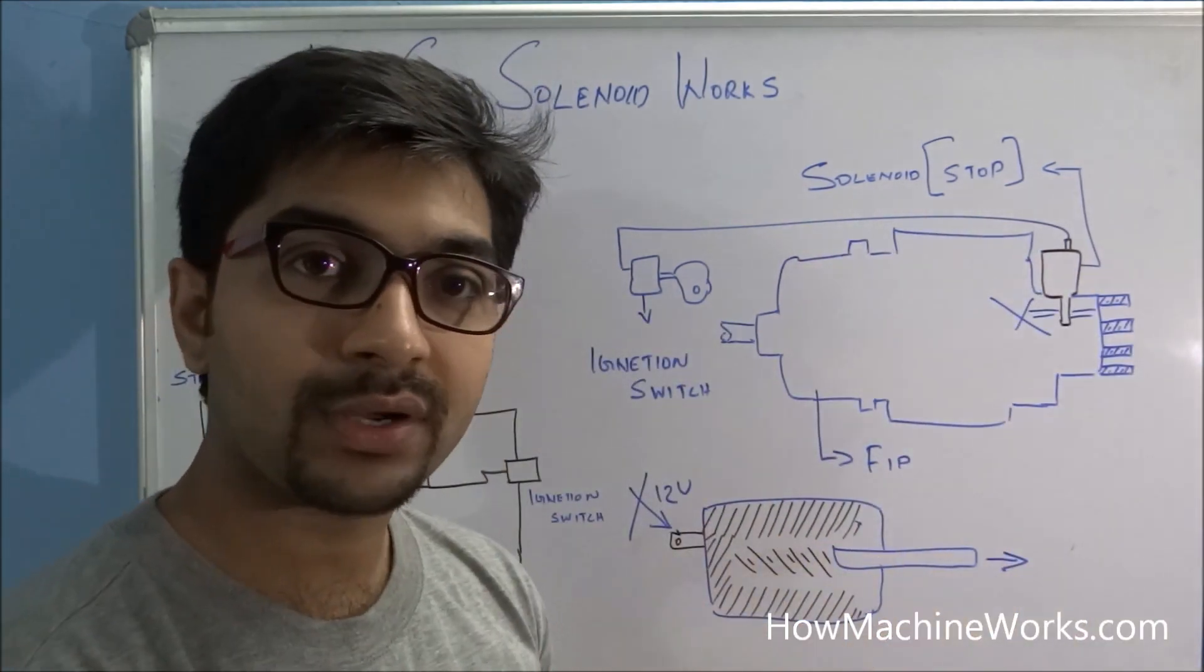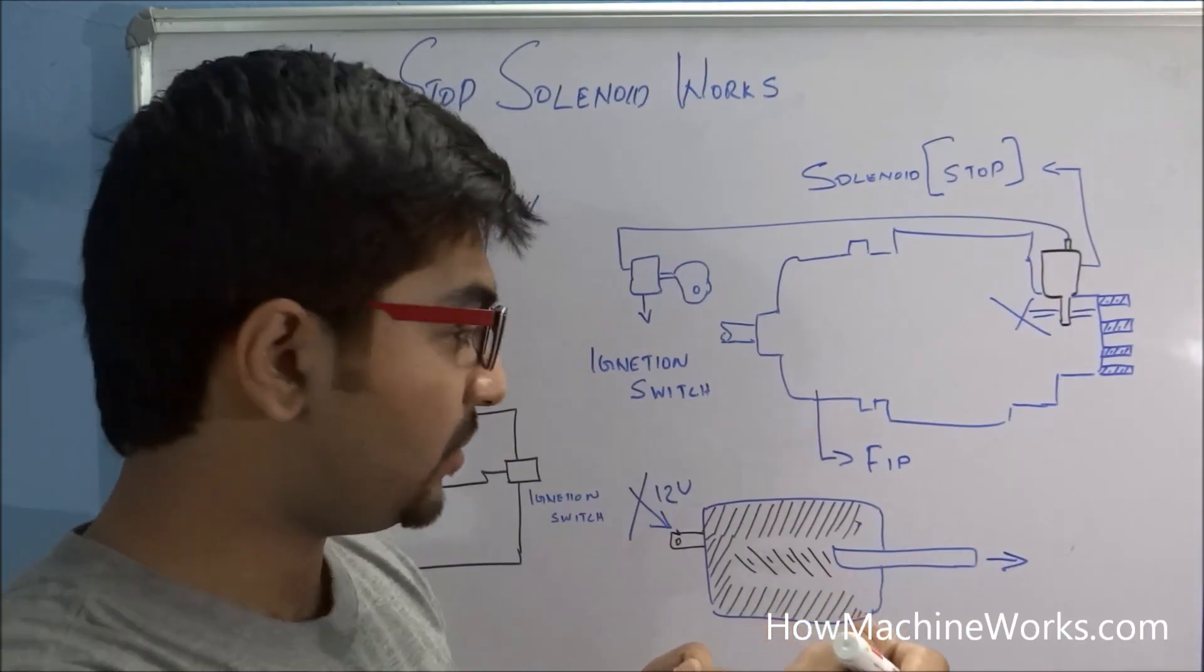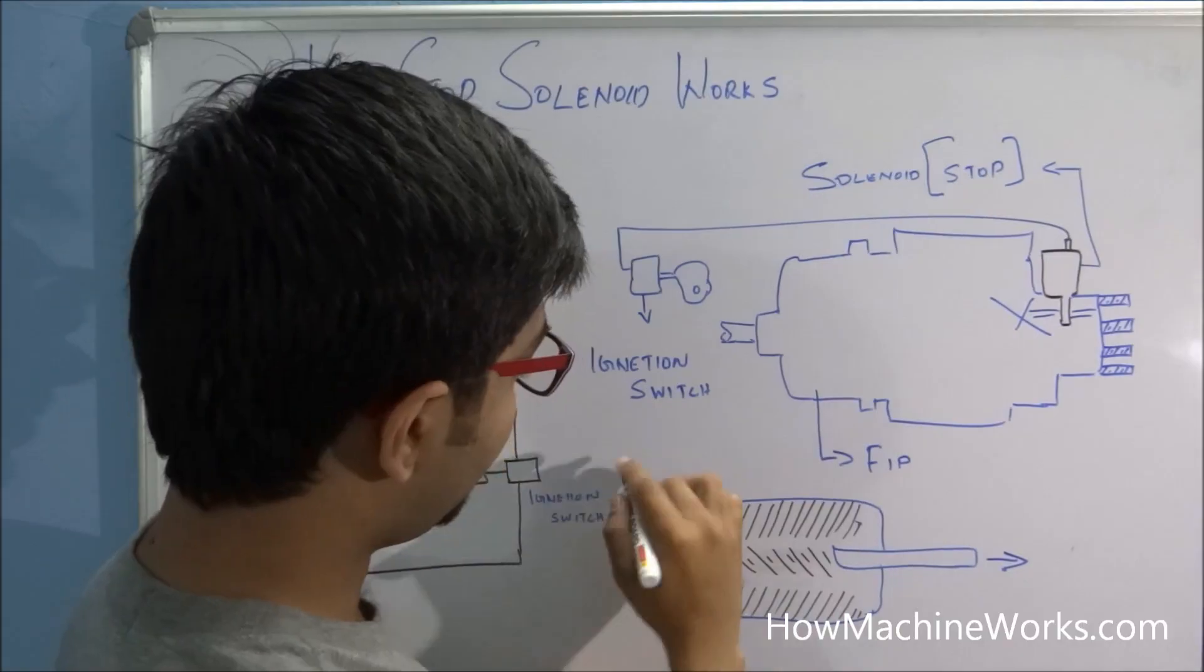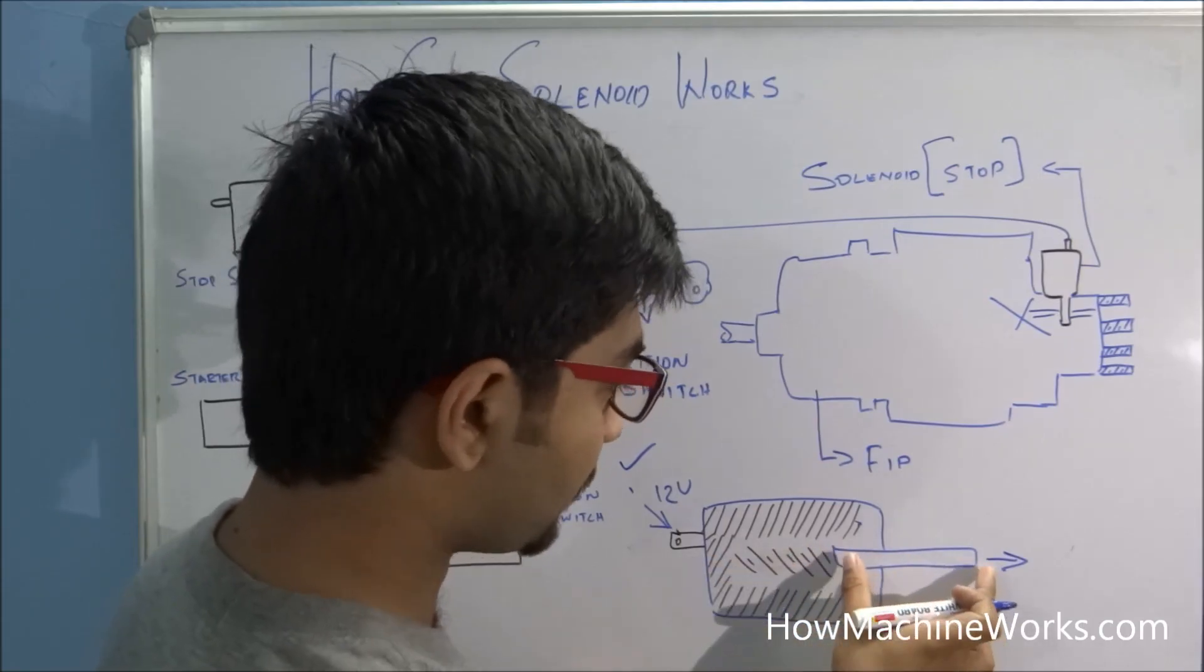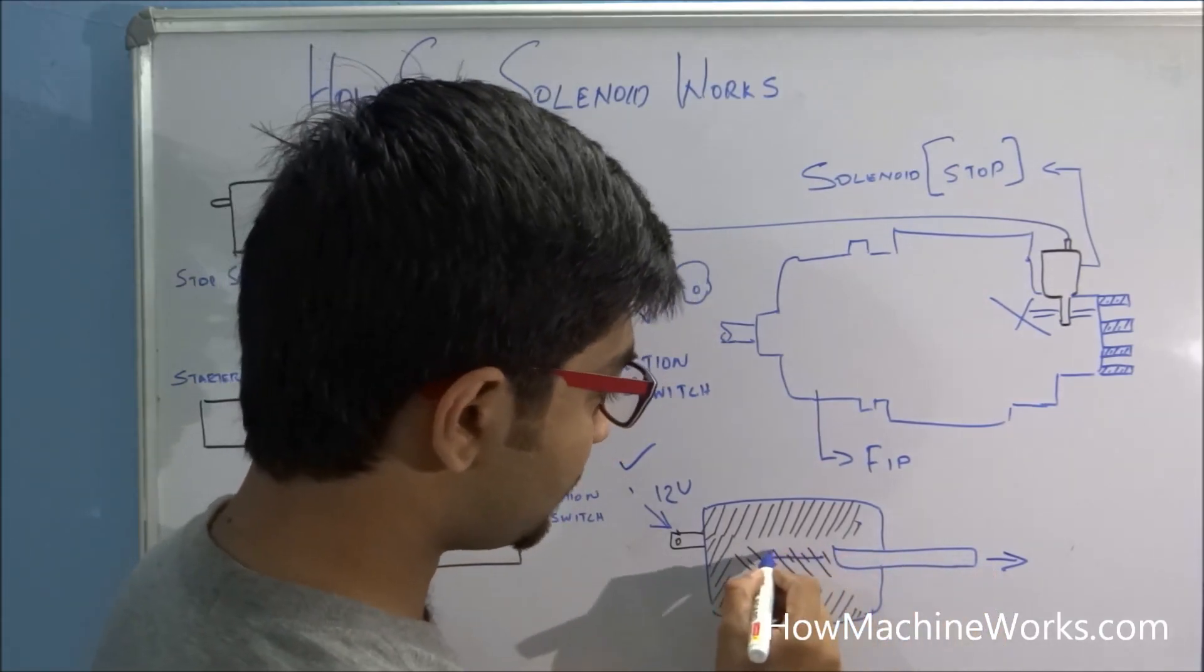The engine will not work. So the vehicle is in off condition. And when you turn on the ignition key, this power reaches the electromagnet and it attracts this shaft, resulting in this shaft moving inside by compressing this spring.